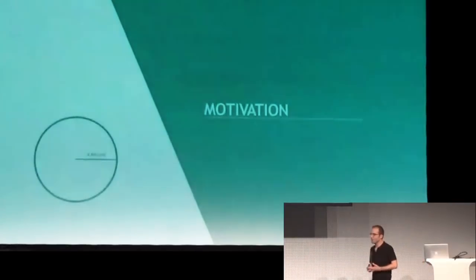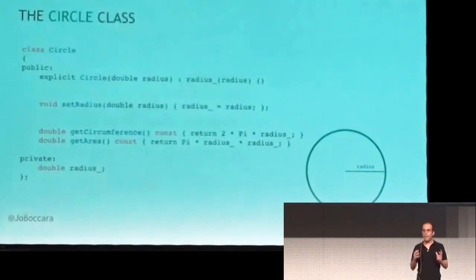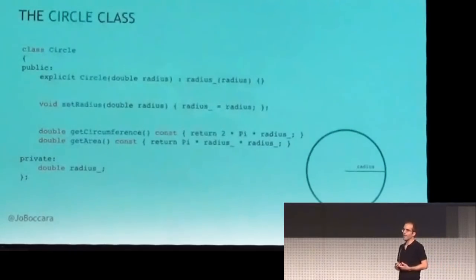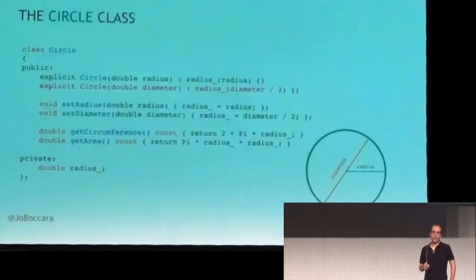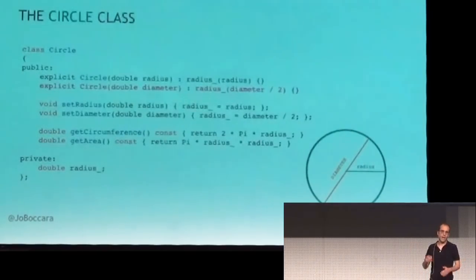I was about to tell you a story — it's the story of a circle. A happy little circle class that lives in a happy circle world. You can build it from a radius and change the radius, and it does what a circle is supposed to do, like giving its area, giving its perimeter, that kind of thing. All goes well until there's a major disruption: we have a new requirement, which is to be able to build this circle from a diameter, which makes sense. But the problem is, adding a new constructor doesn't compile, because there are two constructors that have the same prototype — it's ambiguous.